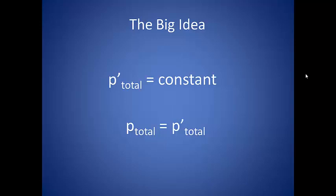So the big idea here is that the total momentum of a system is constant. When we say total momentum, we are referring to the sum of each individual object in the system.